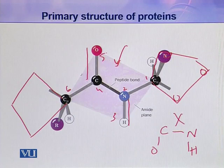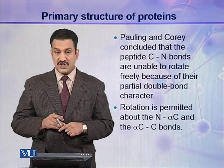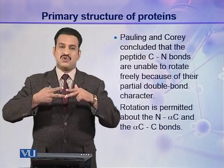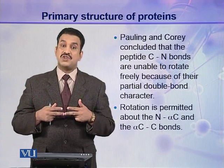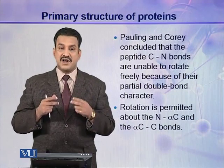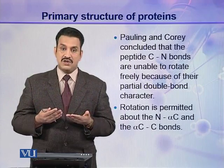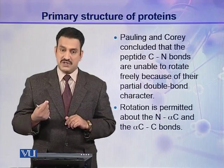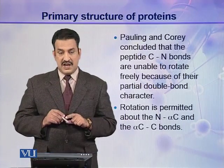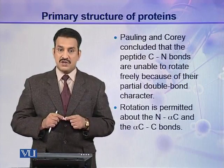Pauling and Corey concluded that the peptide C-N bonds are unable to rotate freely because of their partial double bond character. Single bonds can rotate, but double bonds cannot, and since the peptide bond is a partial double bond, it is a rigid bond and cannot rotate. So how do different peptide groups become angular to each other? Rotation is permitted about other bonds — specifically the N–alpha carbon linkage (phi) and the alpha carbon–C bond (psi). The peptide bond between C and N remains rigid.